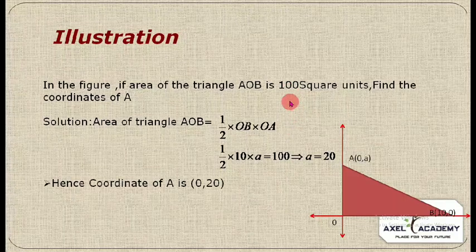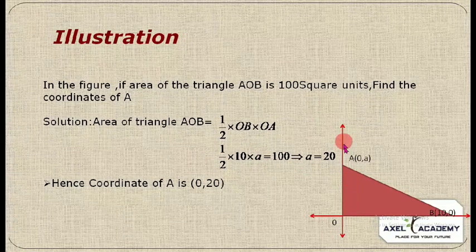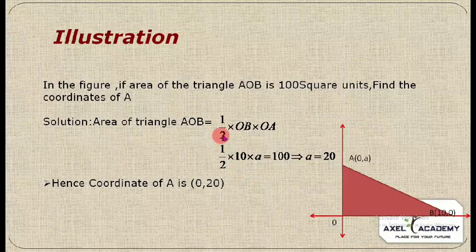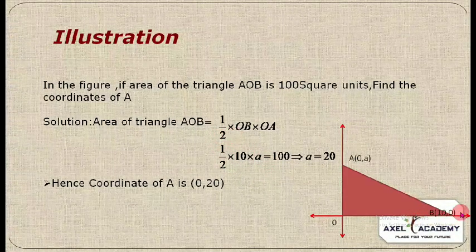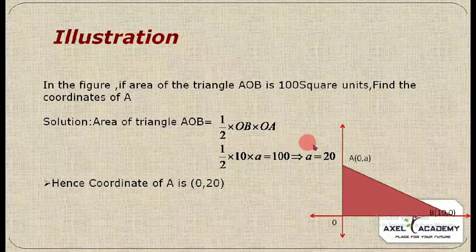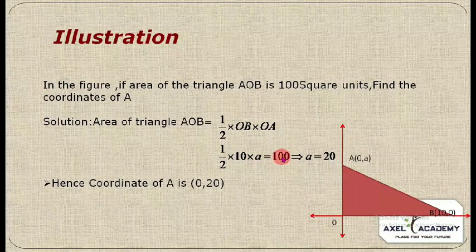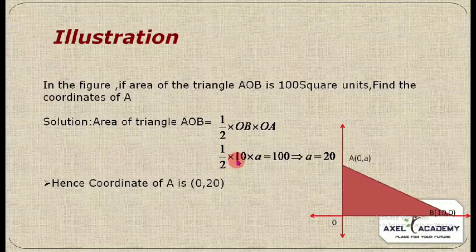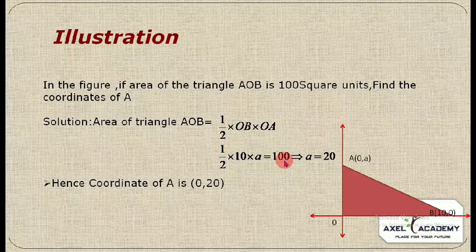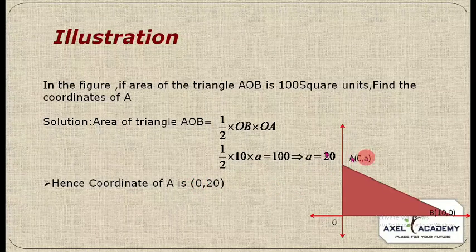Triangle AOB is a right-angle triangle. The area of a right-angle triangle is half times base times height. Here, base = OB = 10 and height = OA = a. So: (1/2) × 10 × a = 100, which gives 5a = 100, so a = 20. Therefore, the coordinates of A are (0, 20).